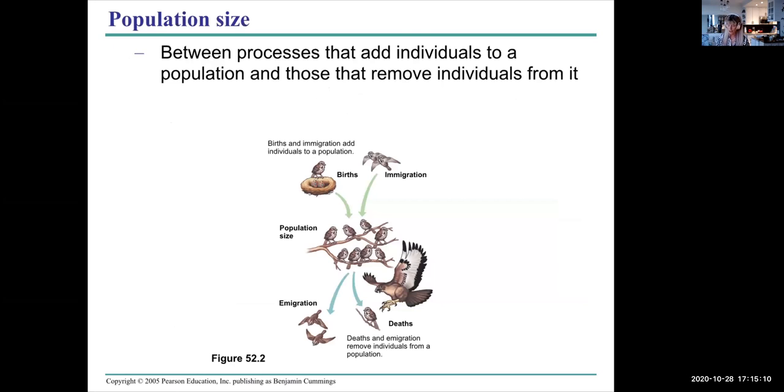How do we measure population size? Well, between the processes that add individuals to a population and those that remove individuals from it. What adds to a population? Births plus immigration. Those two things must be taken into consideration for population growth. What decreases a population? Emigration and deaths.